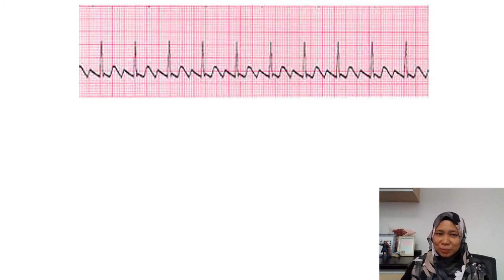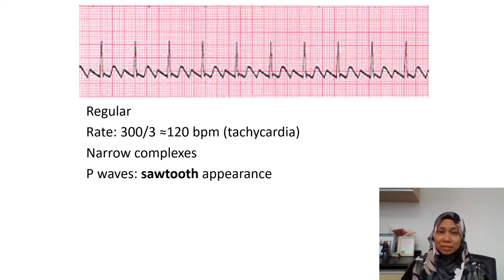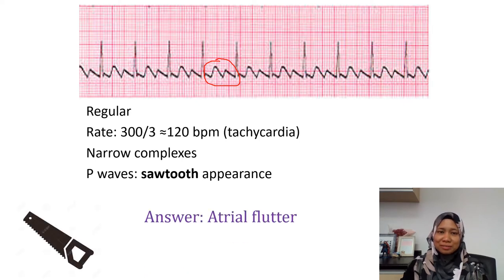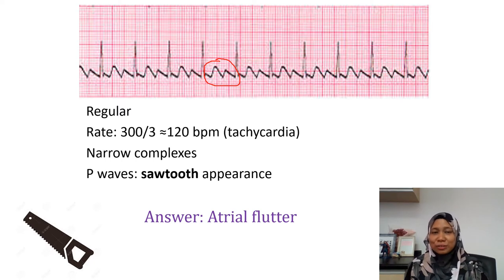The next strip is also regular — the RR interval is the same throughout the strip. The rate is about 100 beats per minute, narrow complexes. However, there is something special here: it looks like a sawtooth appearance. This is an atrial flutter. The sawtooth pattern is very pathognomonic of atrial flutter.